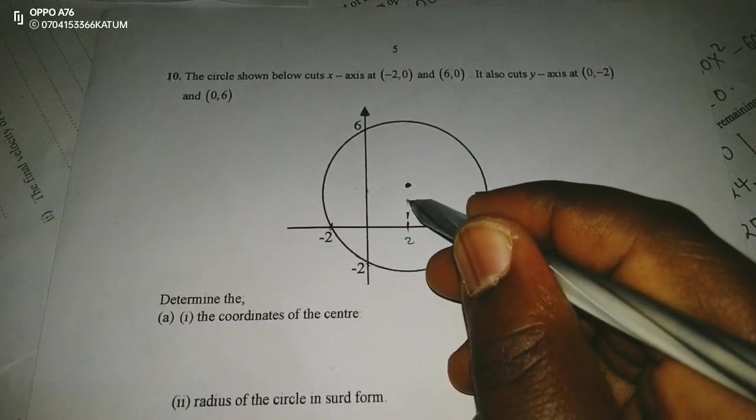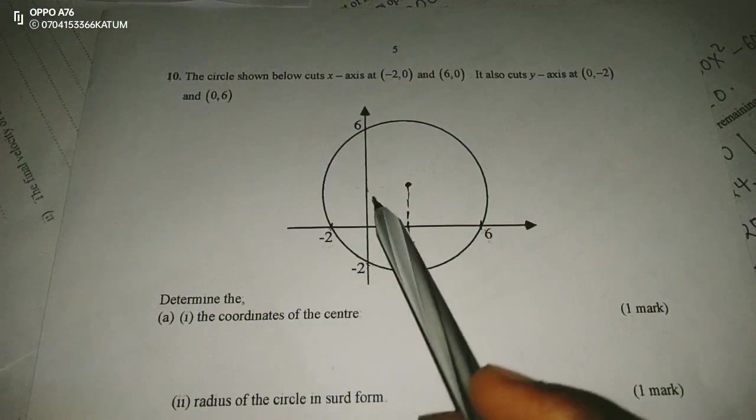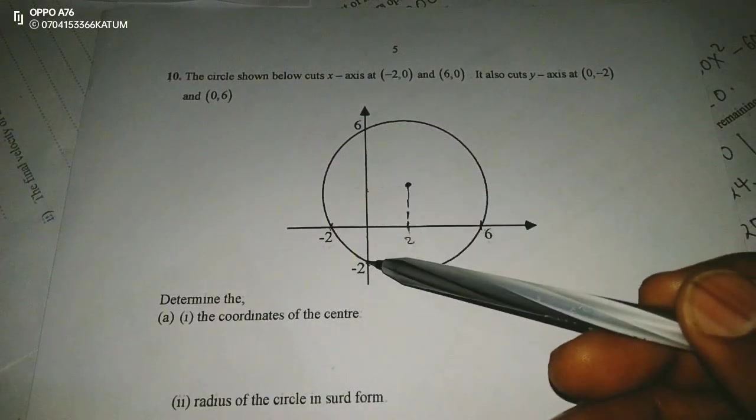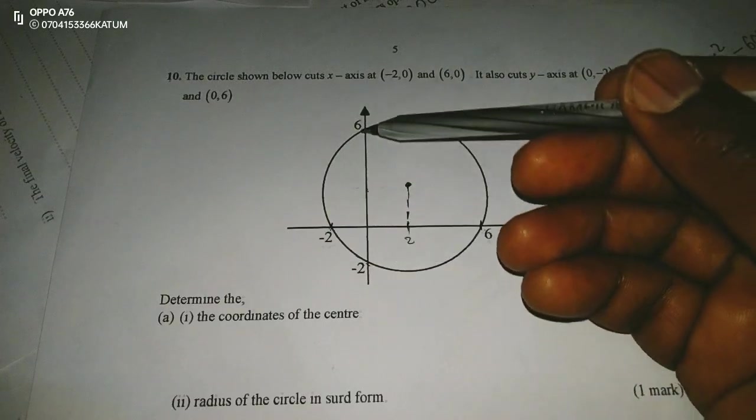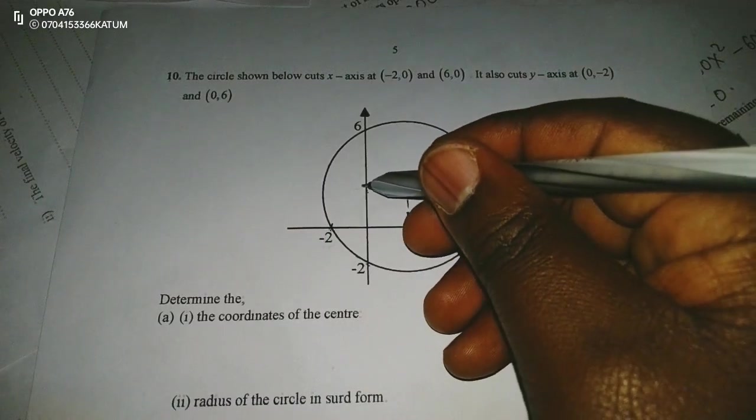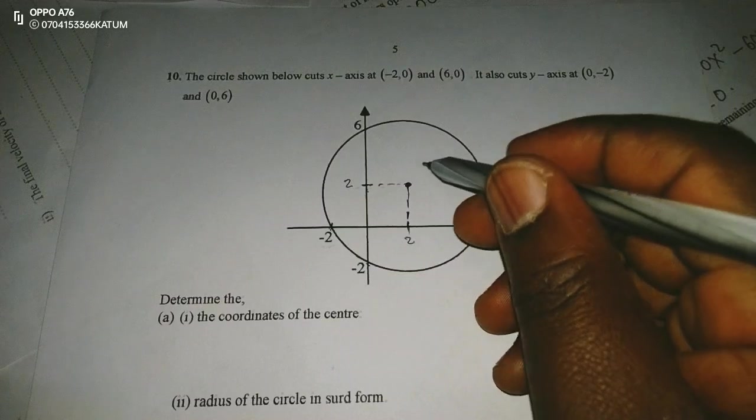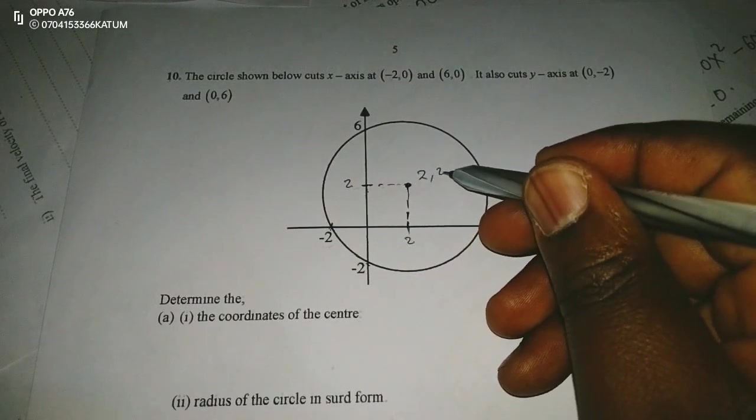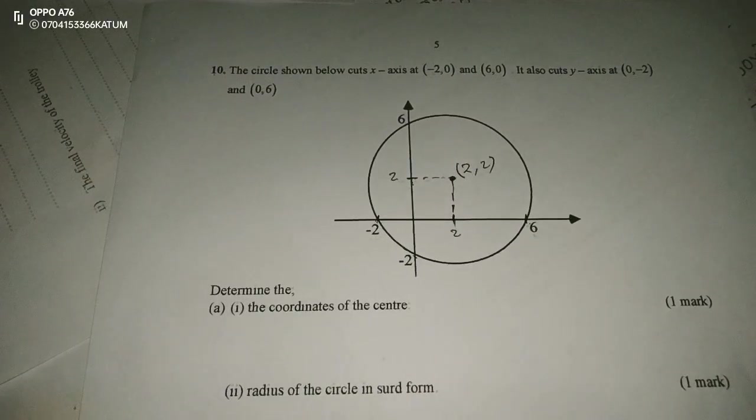Therefore, the center of the circle will also be at the same point somewhere there. Then again, following the vertical axis from -2 to positive 6, we'll also have 4 units from any of the ends. So 4 units from 6 down here, it will also take us to positive 2. Therefore, the coordinate (2, 2) becomes the center.